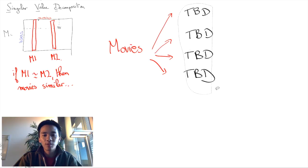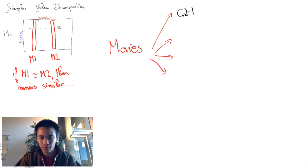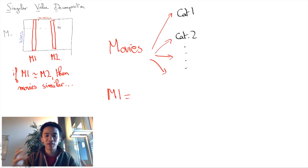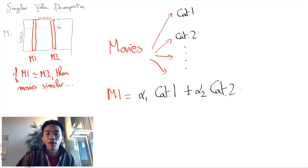Slightly more formally, each movie will not be of one single category. Instead, each movie will be composed of different categories. In linear algebra, we have a very clever way to write this. We'll consider that each movie is a linear combination of basis unit vectors,